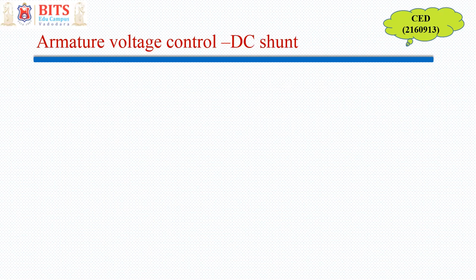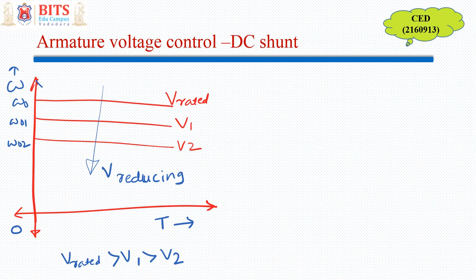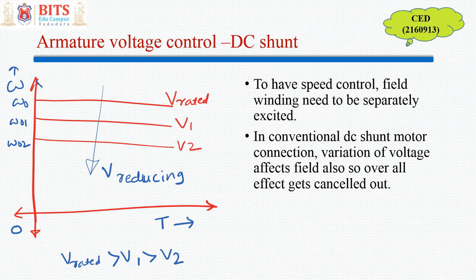Now DC shunt motor is also having the same situation, but the condition over here is that you cannot keep the shunt connection as it is. Because armature has to be separately connected and field has to be excited separately, otherwise this method is not applicable. If you maintain that shunt connection, the effect of voltage reduction and effect of change in flux cancel out each other and overall effect is not there in the speed variation.